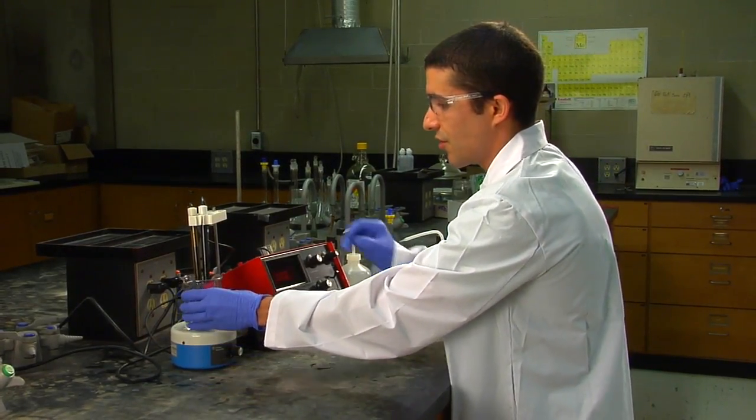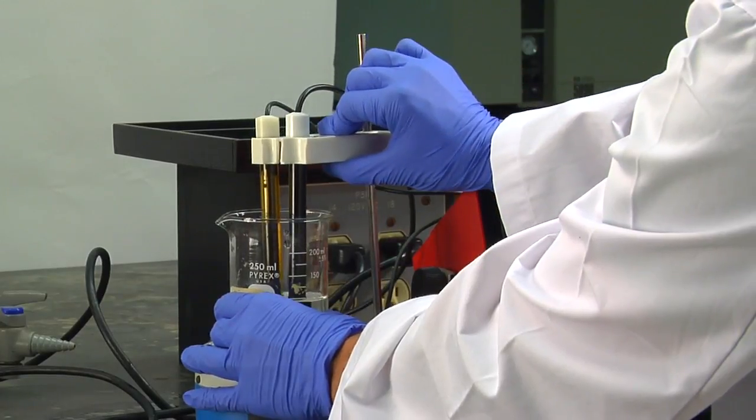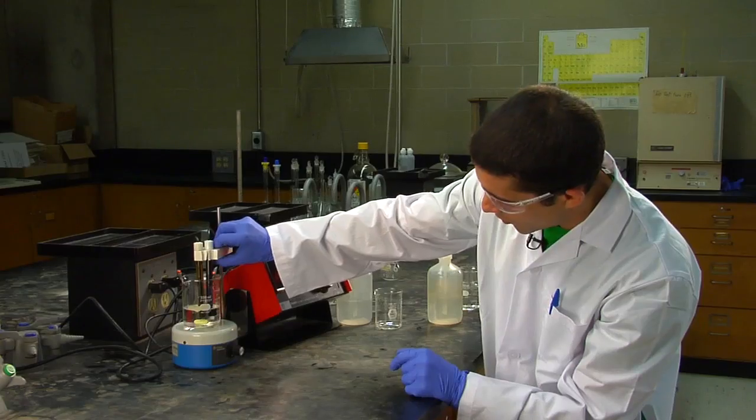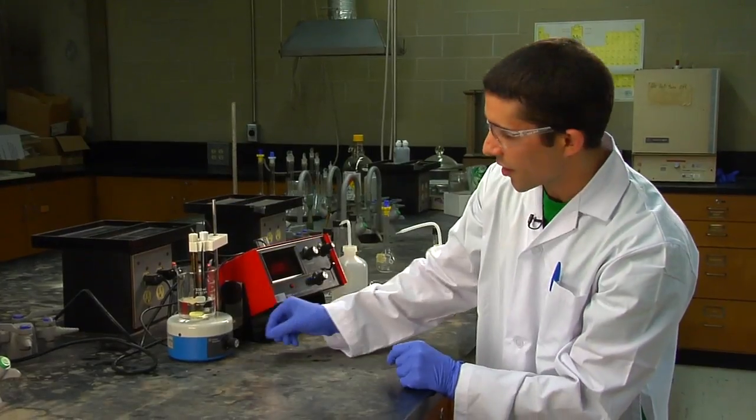You can then place in your sample, and you can lower the electrodes, not too far that you hit the magnetic stirrer.